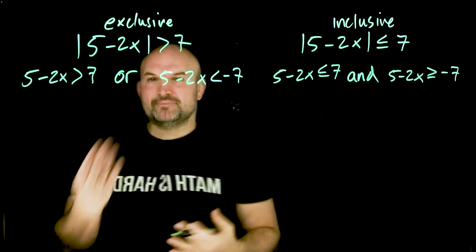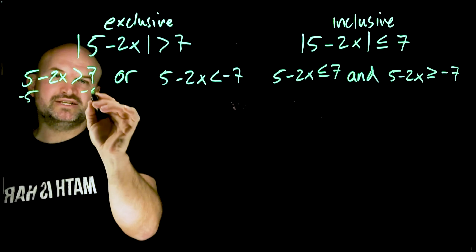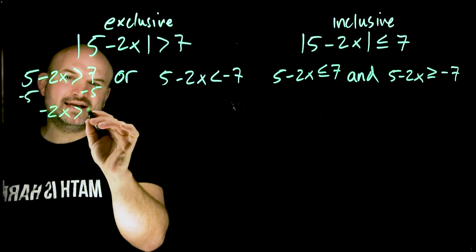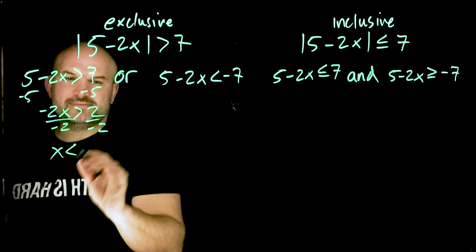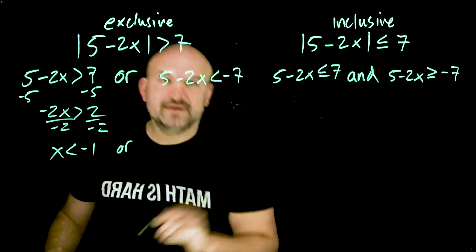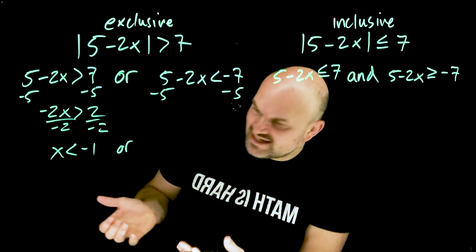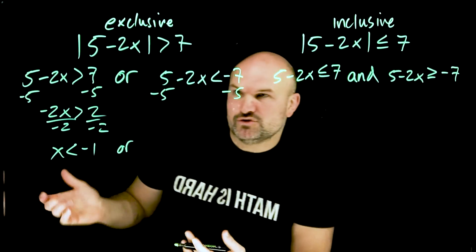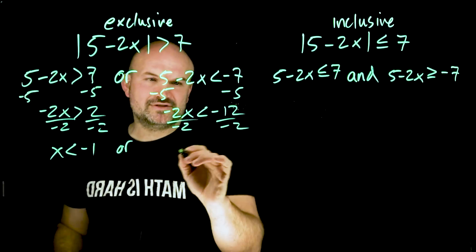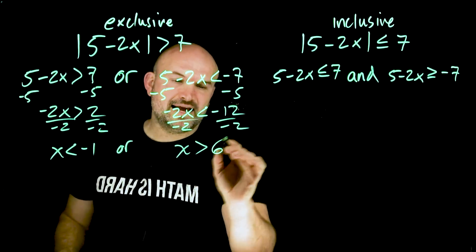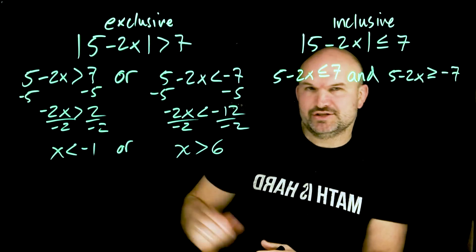Let's go through the step-by-step process to solve this. We want to isolate X, so we undo the addition of five. We get negative two X is greater than two; dividing both sides by negative two — remember, we flip the sign — so X is less than negative one. Or, doing the same process on the other side, we subtract five. Since this is a negative seven: negative seven minus five gives negative twelve. So negative two X is less than negative twelve; dividing by negative two and flipping the sign, X is greater than positive six. For this to be true, either one or the other will be true.